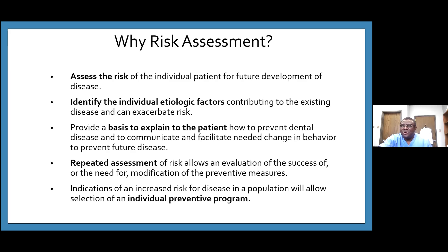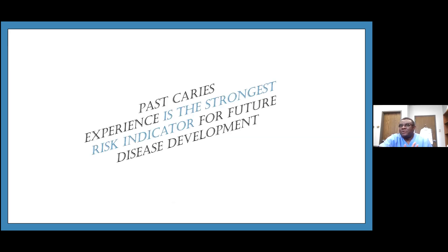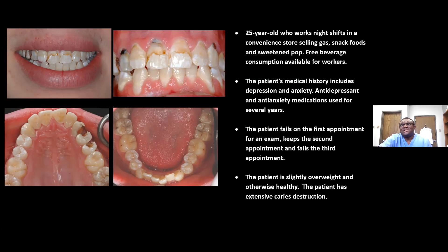An indication of increased risk for disease in a population will allow selection of individual preventive programs. From experience, we know that the past experience of a patient is the greatest risk indicator for future disease development. For example, consider a 25-year-old patient who works the night shift in a convenience store selling snack foods and sweetened beverages — with access to free beverage consumption — whose medical history includes depression and anxiety, and who uses antidepressant and anti-anxiety medications for several years.